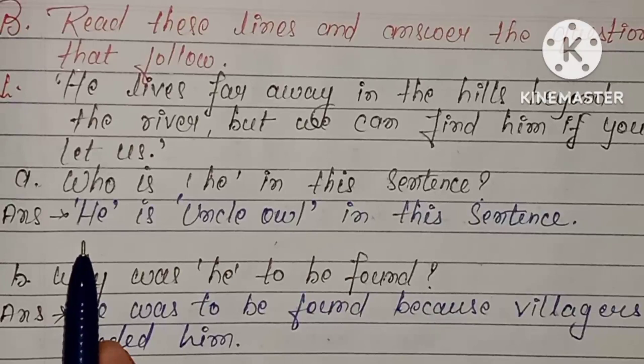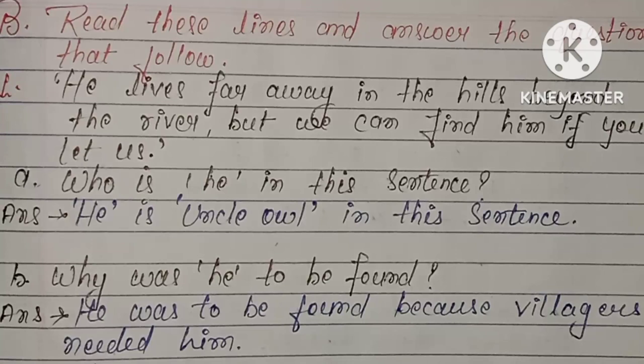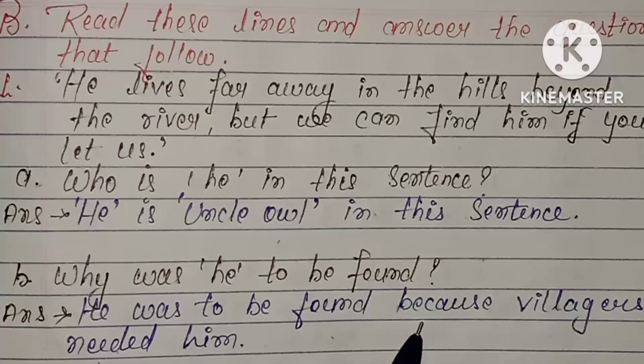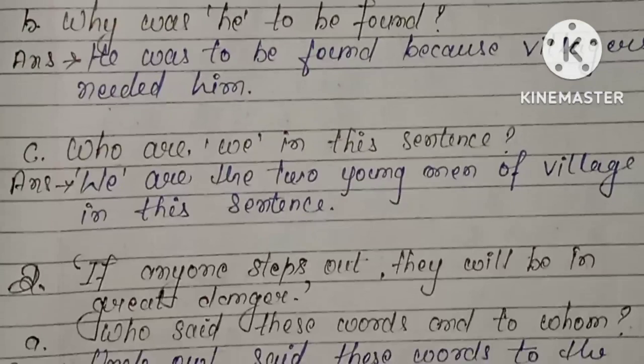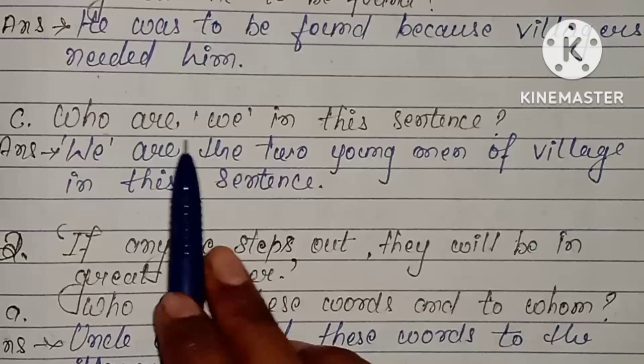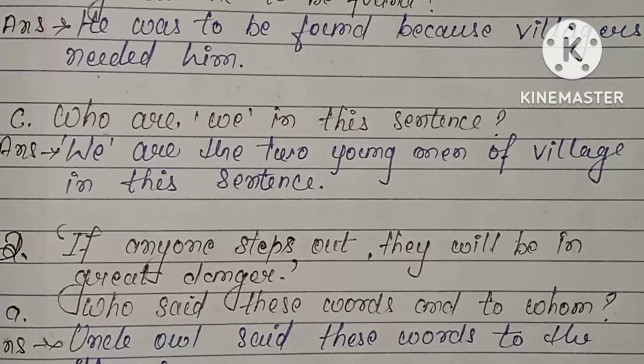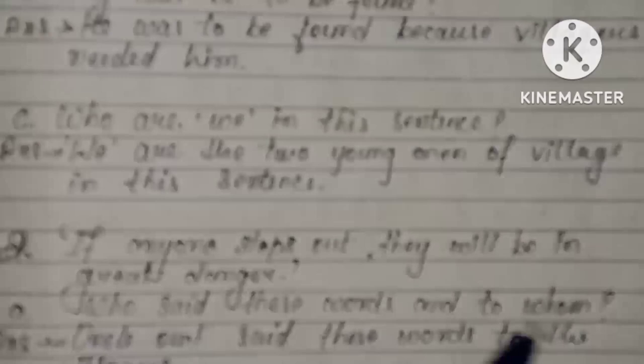Jaisa ki aap lhoog yaha pe dhek rha hai — pahla ka answer hai: he is uncle owl in this sentence. Why was he to be found? He was to be found because villagers needed him — kyoki villagers ko unki bohat zyadha zaroorat thi, villagers bohat zyadha problem me thay. Who are 'we' in this sentence? We are the two young men of the village.